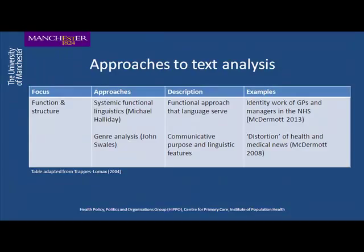The next approach to text analysis — if you're interested in looking at the function and structure of text — is systemic functional linguistics by Halliday. This is a functional approach to language, looking at the grammar in functional terms — why do you use a particular grammar rather than others? For example, if you want to get someone to open the book, you could say 'open the book,' 'you could open the book,' or 'you should open the book.' Why you use 'could' and 'should' is the kind of thing that systemic functional linguistics tries to unravel.